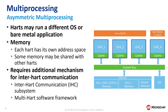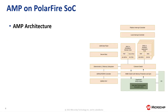In terms of memory, each of the software contexts have their own memory area, and there is also a shared memory area for inter-core communication. Now it's time to have a closer look at the AMP architecture on PolarFire SOC.